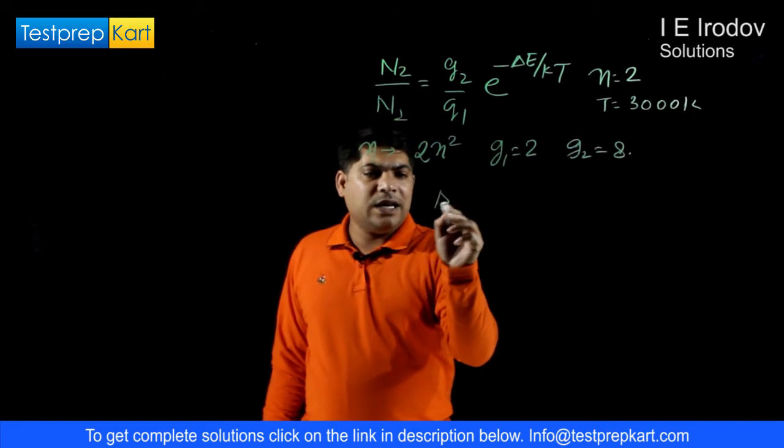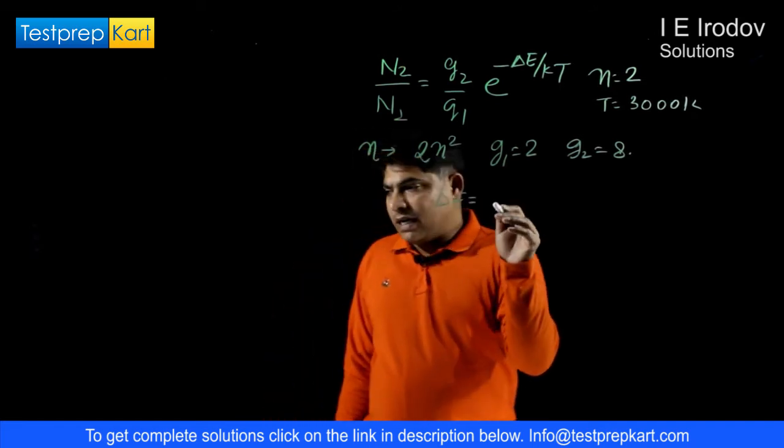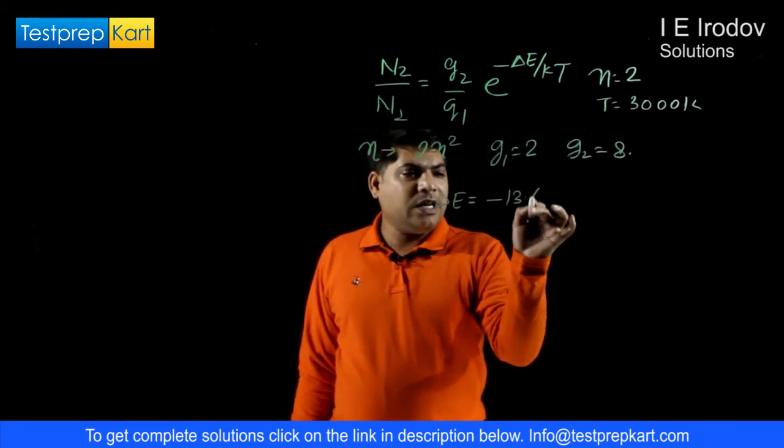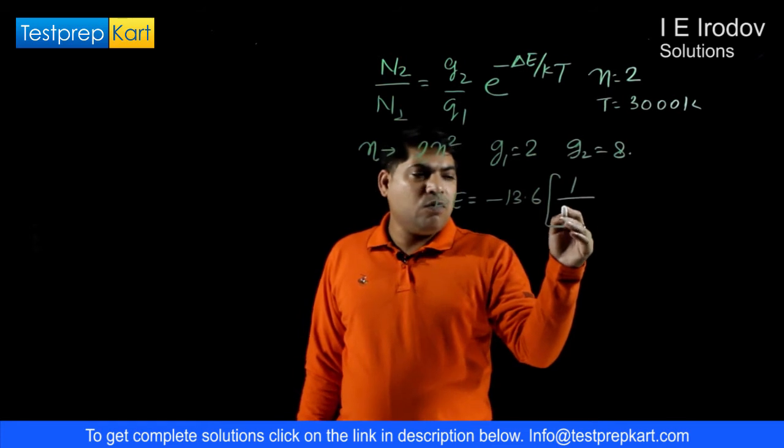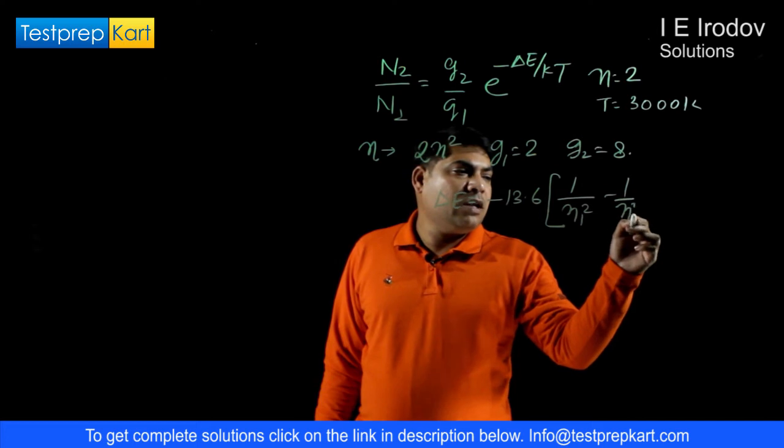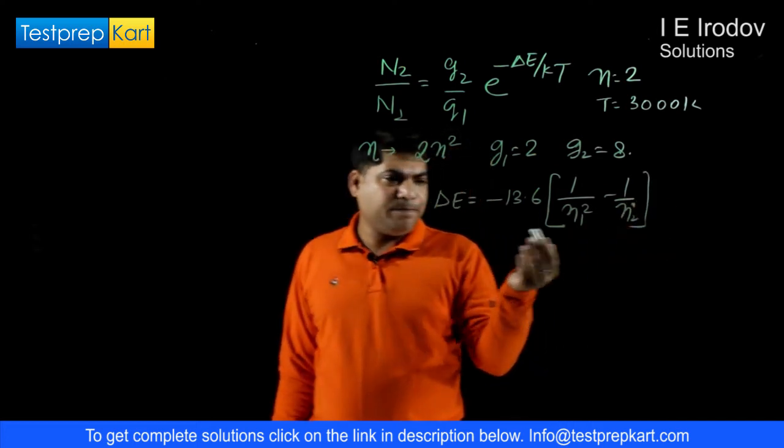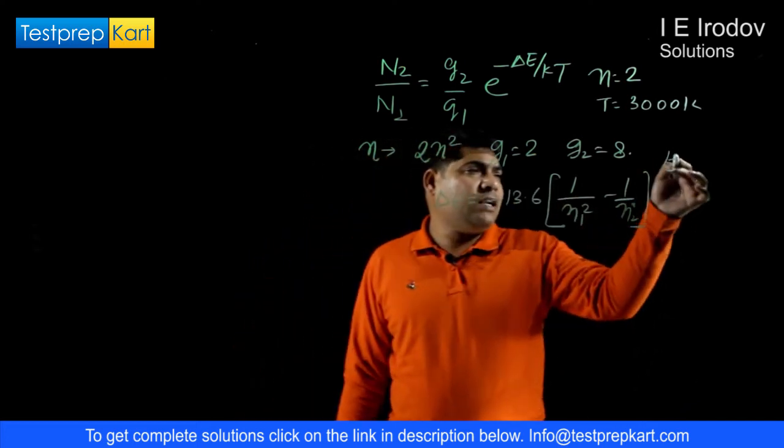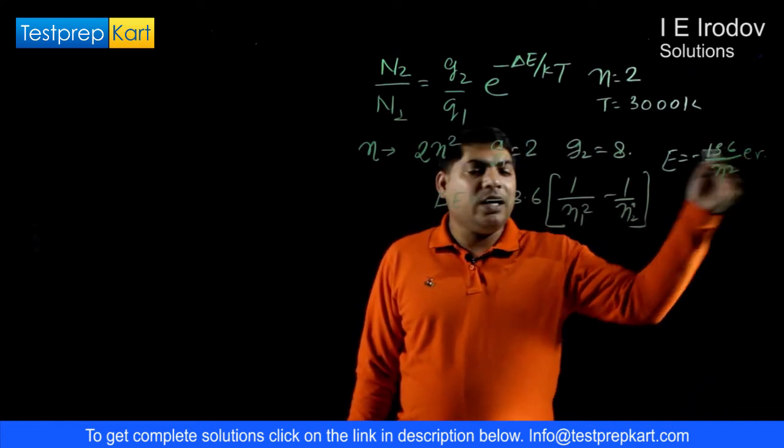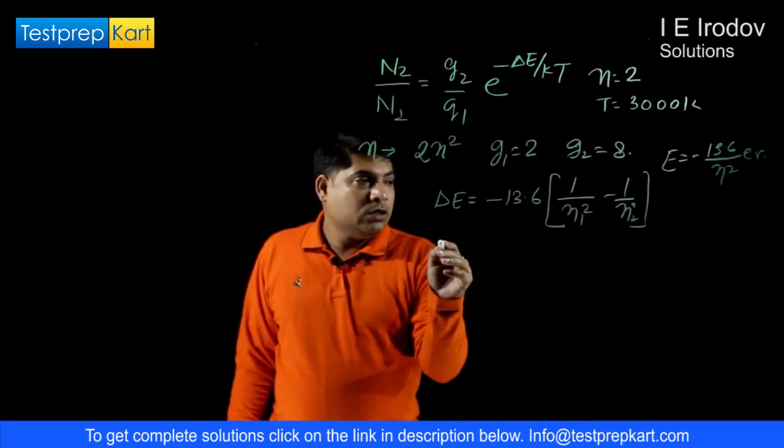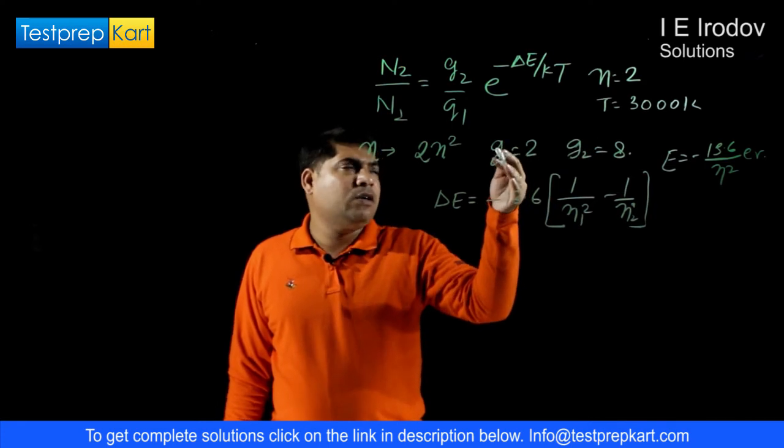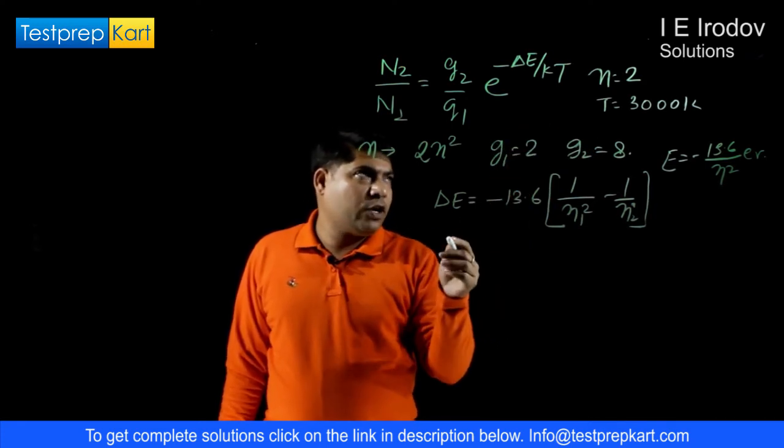Now, second is energy difference delta E. Delta E can be calculated as 13.6 for hydrogen times 1 over n1 square minus 1 over n2 square. As we already know that energy at any level is minus 13.6 over n square in electron volts.